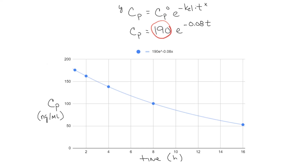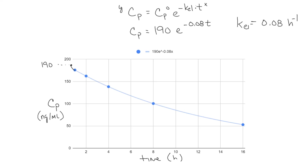So 190 is our CP₀ — the plasma concentration at time zero. That would be 190 on our y-axis. We also see that kel = 0.08 inverse hours. kel is really important because from it we can calculate half-life: t½ = 0.693 / kel. We now have the data needed to calculate some key pharmacokinetic parameters.